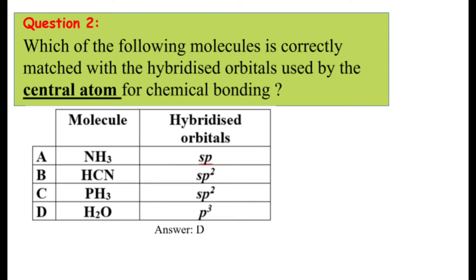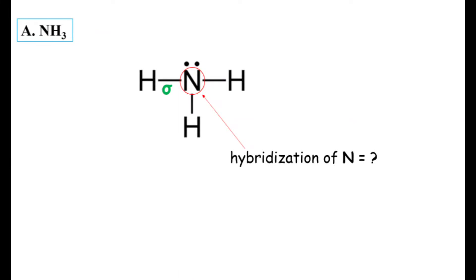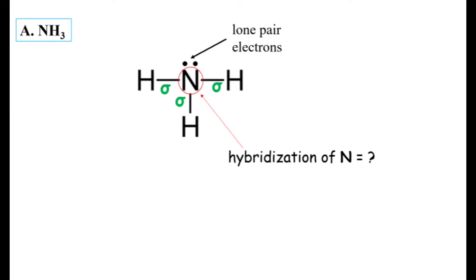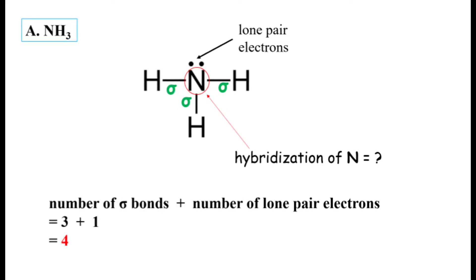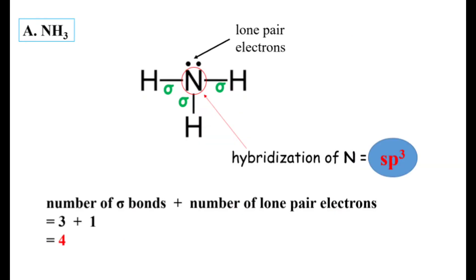Now, let's come back to question two, referring to option A. First, we draw the Lewis structure of the molecule. Then, determine the number of sigma bonds and lone pair electrons. After determining the number of sigma bonds and lone pairs, which is four, and referring to the table, we can conclude that the hybridization of the nitrogen atom is sp3. We use the same steps to determine the hybridization for options B, C, and D.